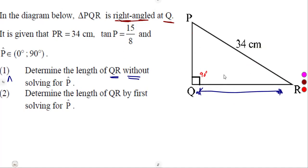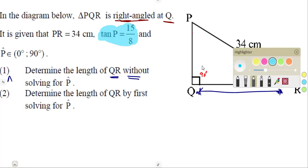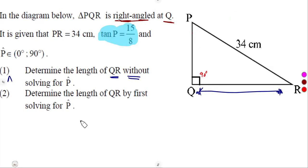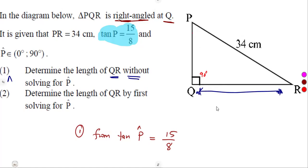Since we are not solving the angle, it means they want us to use the trigonometric ratio that represents that angle. So let's go back to where the angle was used — on which ratio? On the ratio of tan, as we can see from the given information. From the tan of angle P, which is equal to 15 over 8, let's use that.